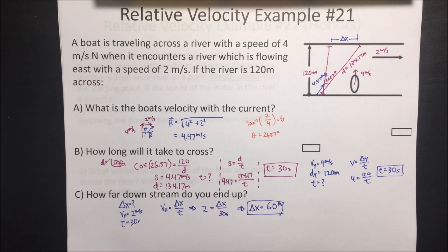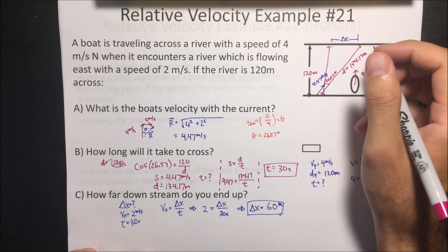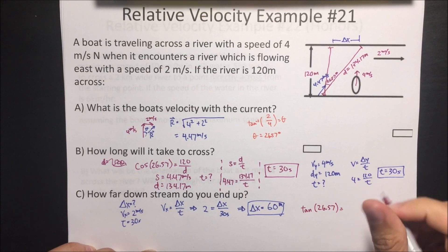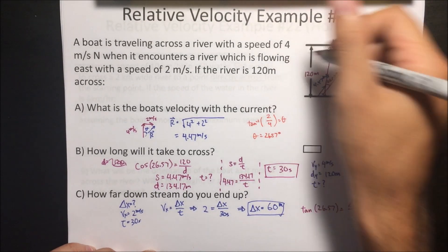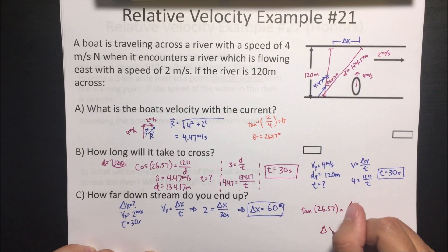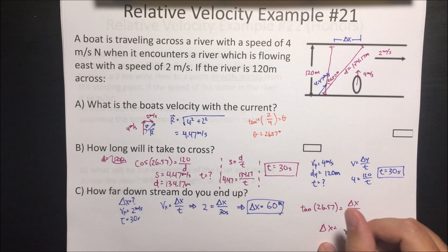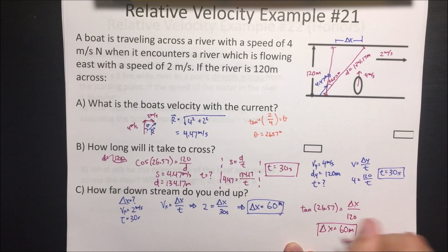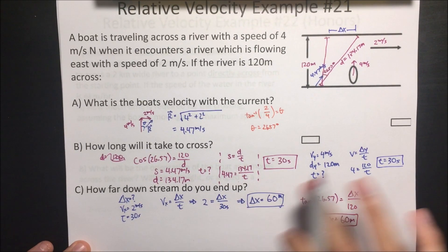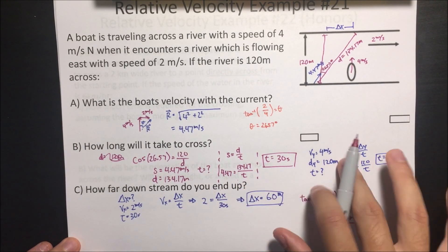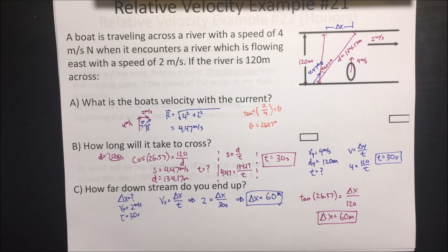You could have used trigonometry to figure that out — for example, tangent of 26.57 equals opposite displacement divided by adjacent 120, giving displacement equal to tangent of 26.57 times 120, which is also 60 meters. We get the same answer. I prefer the component method because it also helps with our next chapter on projectile motion.